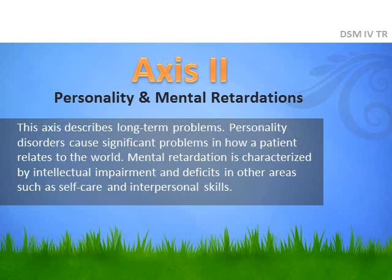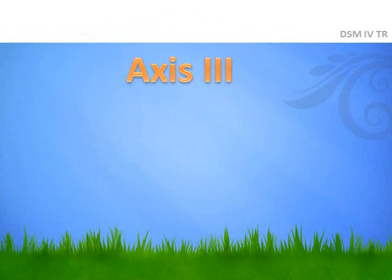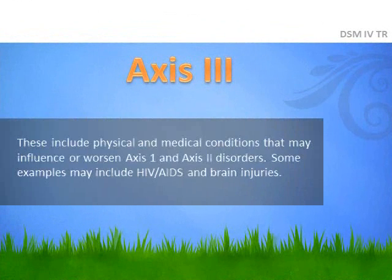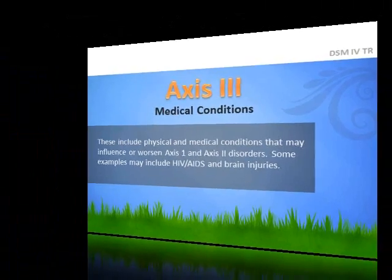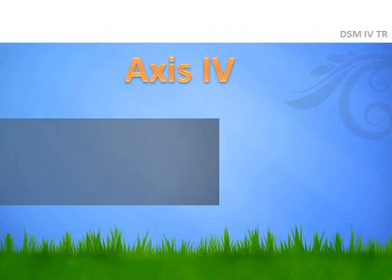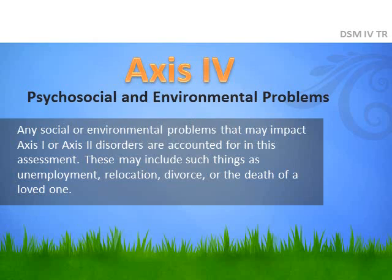Axis 3 covers medical conditions — this is where the interface between psychology and medical issues occurs. These include medical conditions that may influence or worsen the disorders found in Axes 1 and 2, such as HIV/AIDS or traumatic brain injuries.